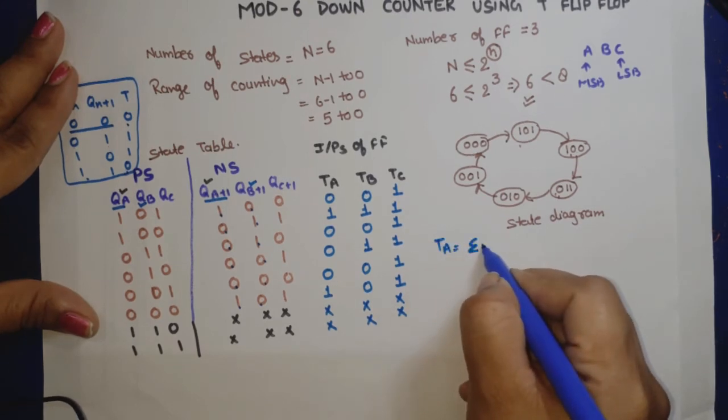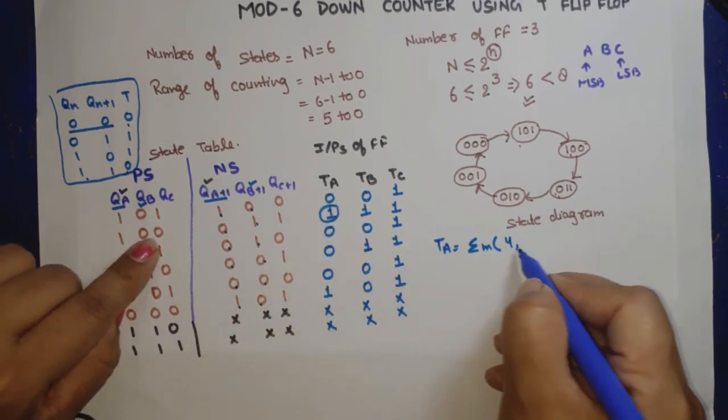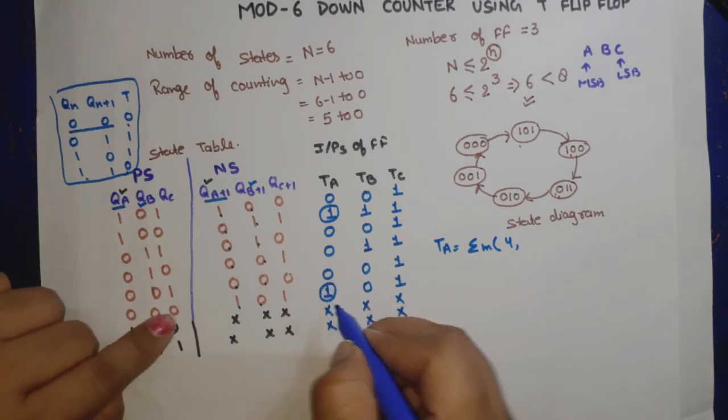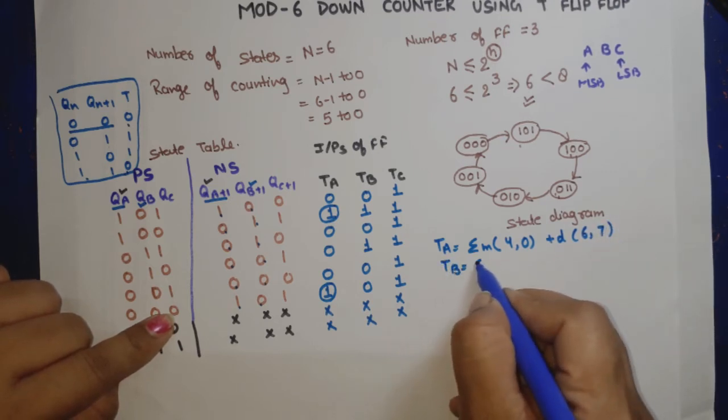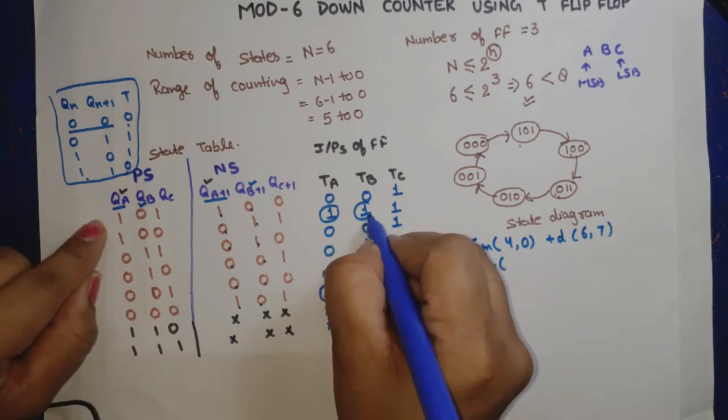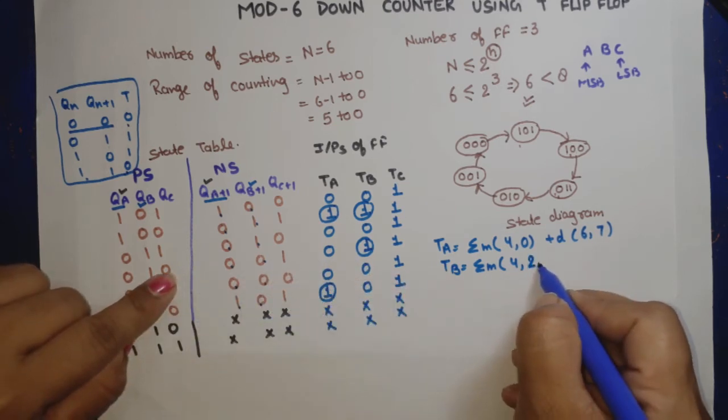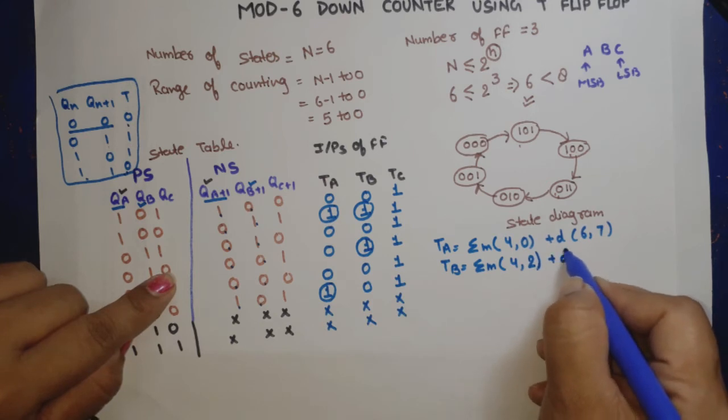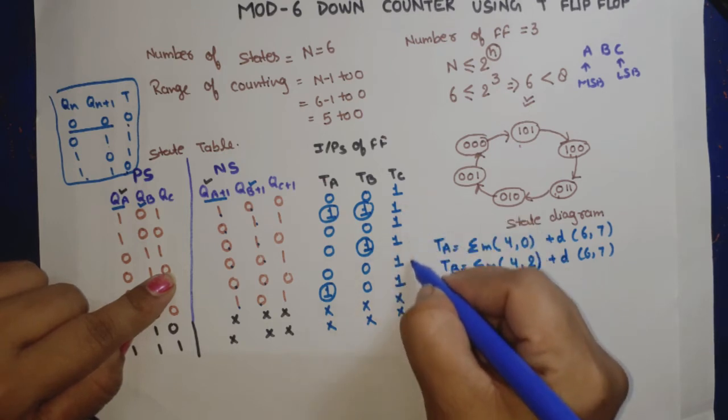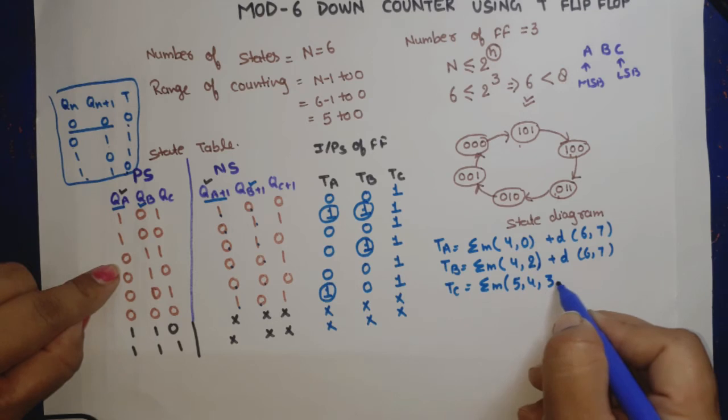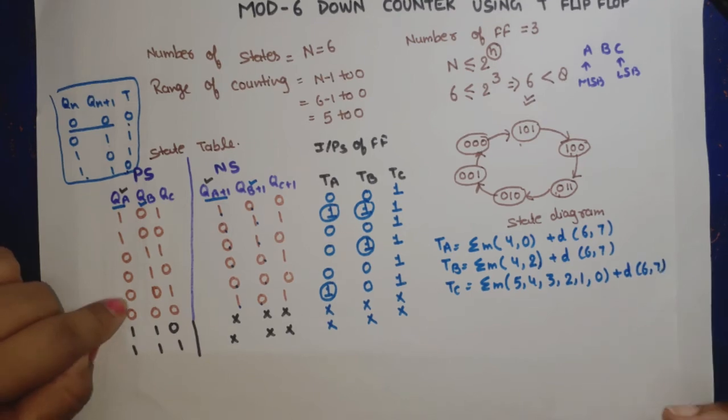Now I'll show the equations. For TA, TA is equal to summation of minterms where value is 1: that's 4 and 0, plus don't care 6 and 7. For TB, TB equals summation m where value is 1: that's 2 and 0, plus don't care 6, 7. For TC, TC equals summation m for all values 5, 4, 3, 2, 1, 0, plus don't care 6, 7.